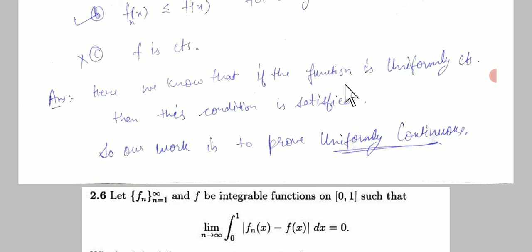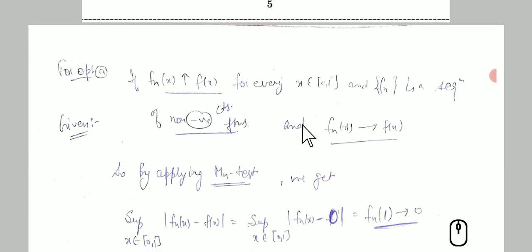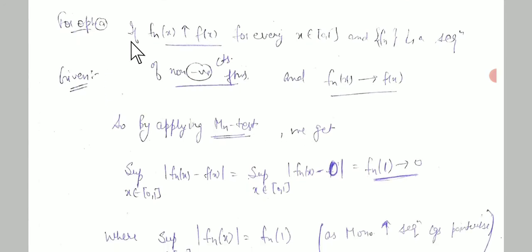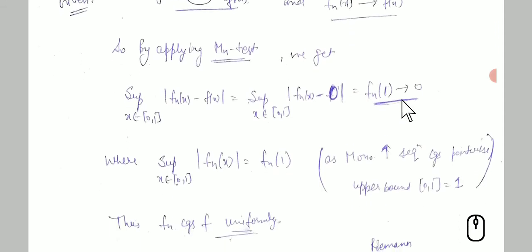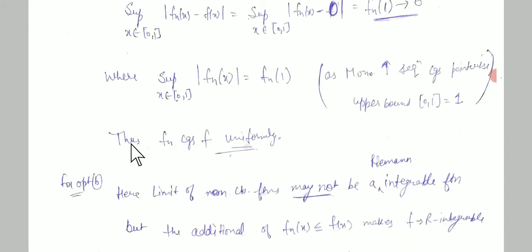For the first option of question five: if fₙ(x) is monotonically increasing and converges pointwise to f(x) for every x in [0,1], then by applying the supremum test, sup|fₙ(x) − f(x)| goes to zero. Since f(x) = 0 and the supremum over [0,1] is achieved at x = 1, we get fₙ(1) → 0, so the supremum tends to zero. Therefore fₙ converges to f uniformly.